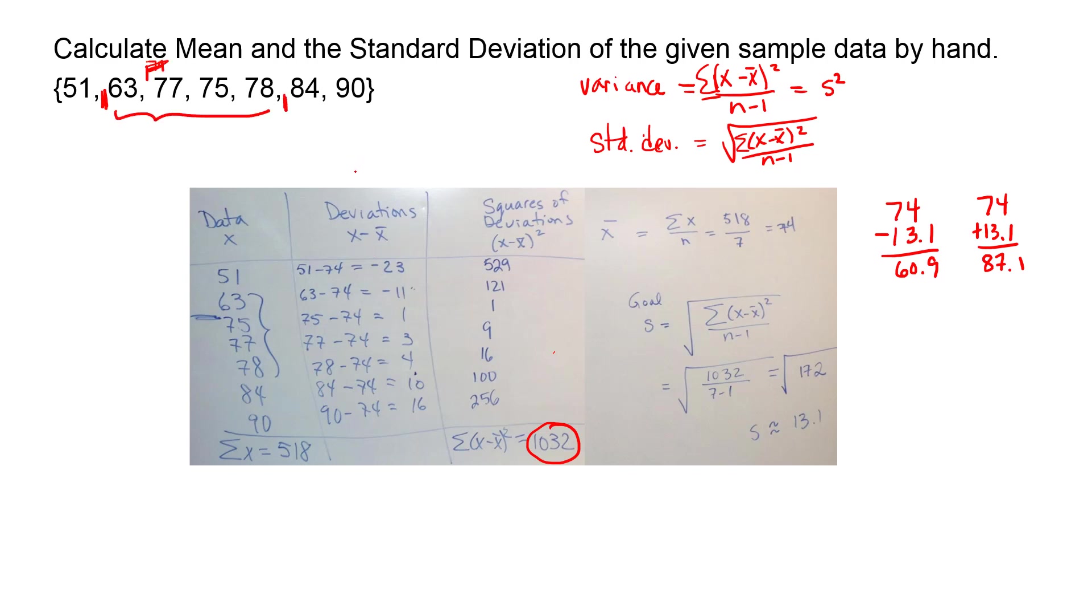Standard deviation is when you square root it, that's why we call this S and the variance S squared. Yes the answer on the quiz if you were asked to find the mean and standard deviation the mean would be 74 that's your X bar and the standard deviation would be the 13.1. If it asked you for the variance what's that? 172 it's the part under the square root.